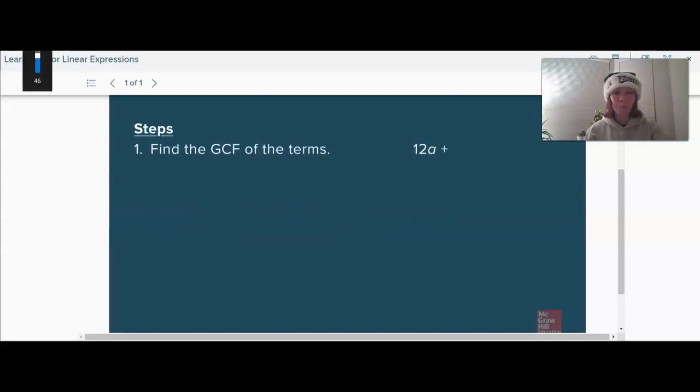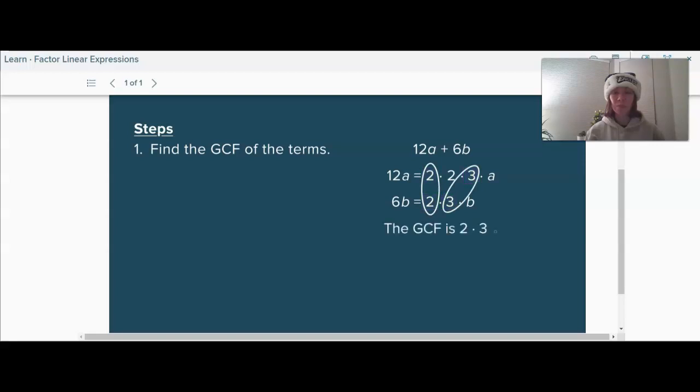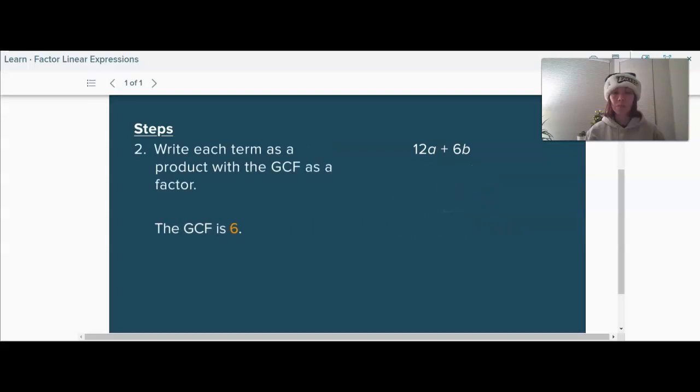To factor a linear expression, start by finding the greatest common factor, or GCF, of its terms. Write the prime factorization of each term. Then circle the common factors. Multiply the common factors to find the GCF. Next, write each term as a product of the GCF and its remaining factors. Then apply the distributive property. The factored form of the expression 12a plus 6b is 6 times the sum of 2a plus b.